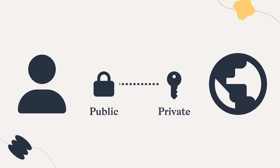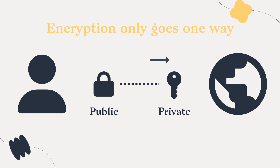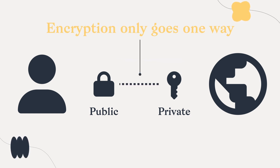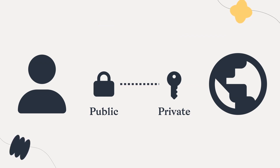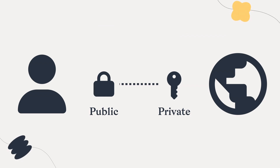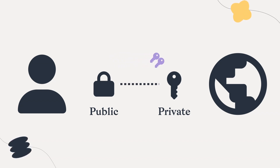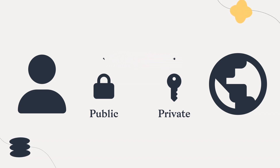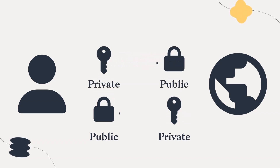Here's the trick. If you were to only use asymmetric encryption, you would have to send the server a public key of your own for them to send you an encrypted message in return. Instead, you send the website a brand new symmetric encryption key that is encrypted with their public key from before.